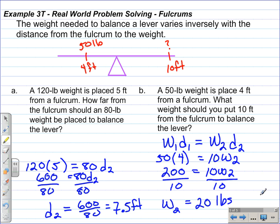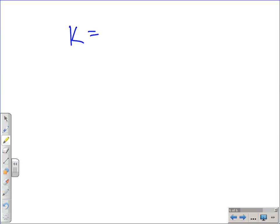This has been Mr. Polarski with inverse variations. Remember, finding the constant of variation for an inverse variation relies on using the product: x times y. The equation for an inverse variation is y equals k divided by x. I hope this lesson helped you. Have a great day.